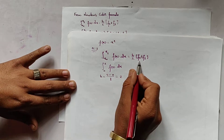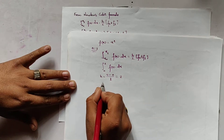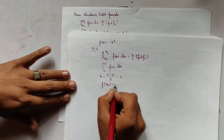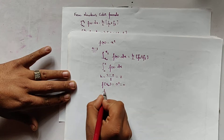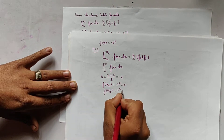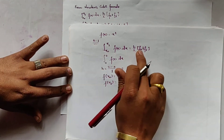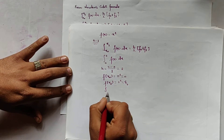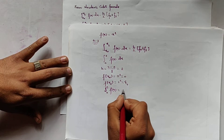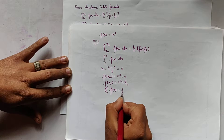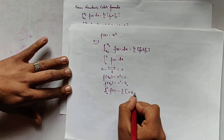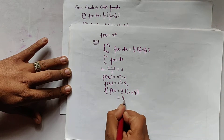We find f(x₀) = f(0) = 0² = 0, and f(x₁) = f(2) = 2² = 4. Applying the formula: integral from 0 to 2 of f(x) dx = (2/2) * (0 + 4) = 4.